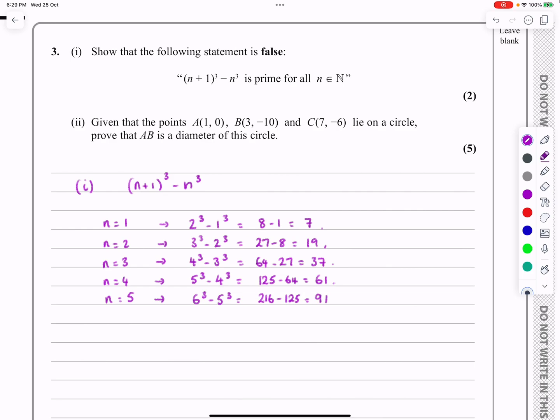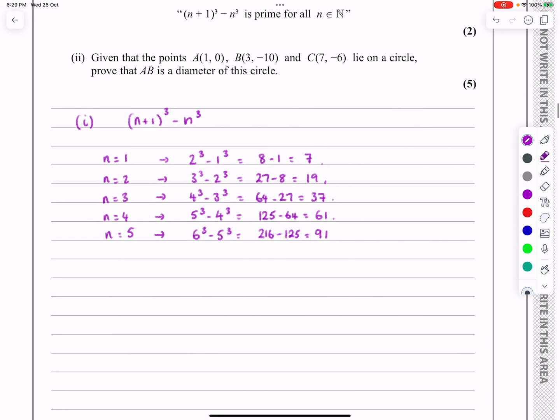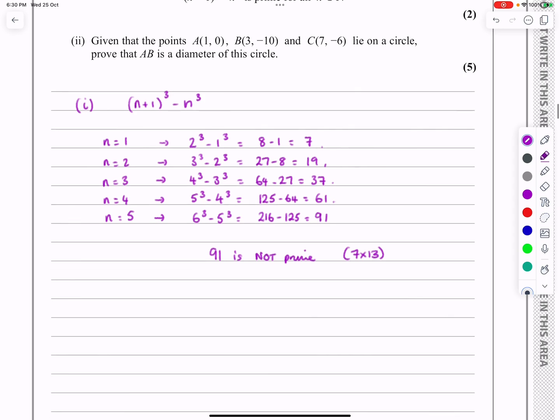So that's quite interesting then that, first of all, yeah, 91 is prime. So you need to recognize that. So, sorry, 91 is not prime. Sorry. 91 is not prime. It's 7 times 13. So they're testing that you do know your prime numbers. And also they're testing the resilience. And it went quite a long way there.